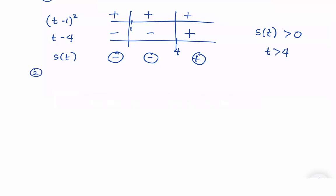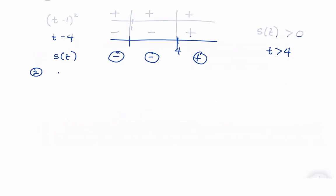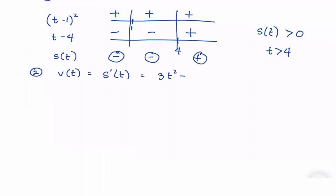For number 2, we want the functions V of T and A of T. V of T is just the derivative of S of T, so that is 3T squared minus 12T plus 9. And A of T, the acceleration, is just the derivative of the velocity function, so that's 6T minus 12.